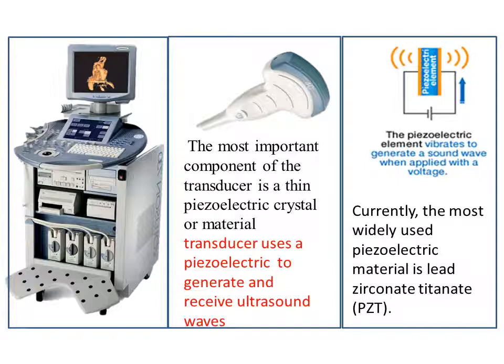An ultrasound scanner consists of three main components: a computer, a screen, and a transducer. The transducer has the ability to convert one form of energy to another. In the ultrasound device, the transducer converts electrical pulses into an ultrasound beam, sends this beam into the body, then receives the reflected ultrasound beam that carries information from inside the body. This signal is then processed and amplified before being displayed on the screen as a real-time image.